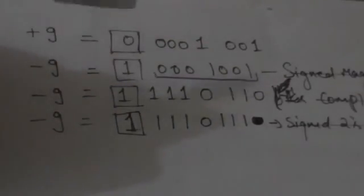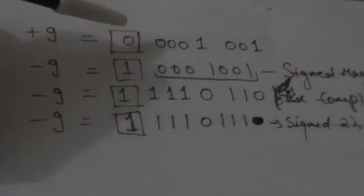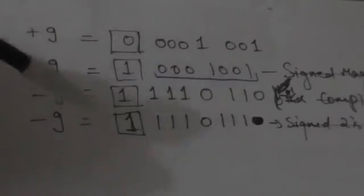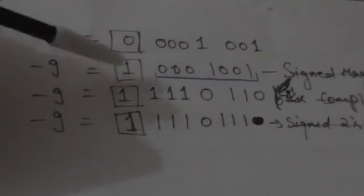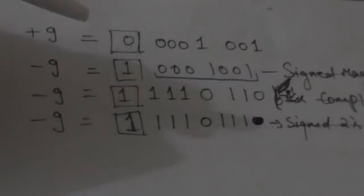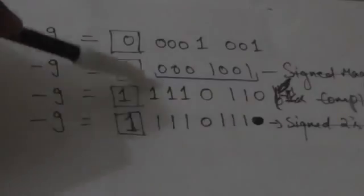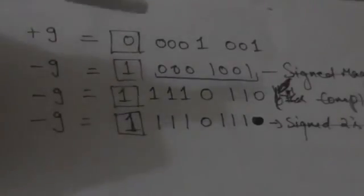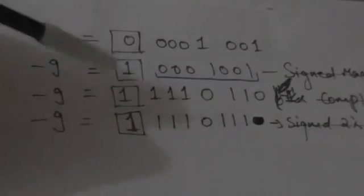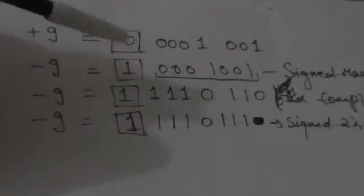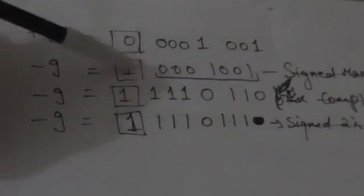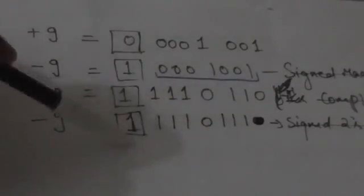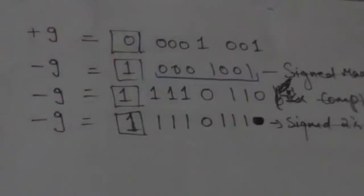Notice that there is only one way to represent positive values in signed binary numbers, but there are three ways to represent negative values. In all three systems, when they represent negative values, the leftmost bit is always 1.